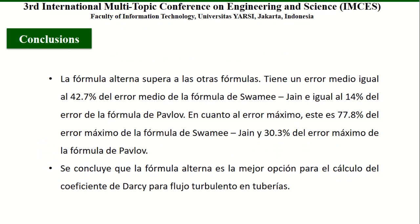In conclusions, the Alternative Formula outperforms the other formulas, having a median error equal to 42.7% of the median error of the Swamee-Jain formula, and equal to 14% of the median error of the Pavlov formula. Regarding the maximum error, it is 77.8% of the maximum error of Swamee-Jain. Therefore, we can conclude that the Alternative Formula is the best option for calculating the Darcy coefficient for turbulent flow in pipes.